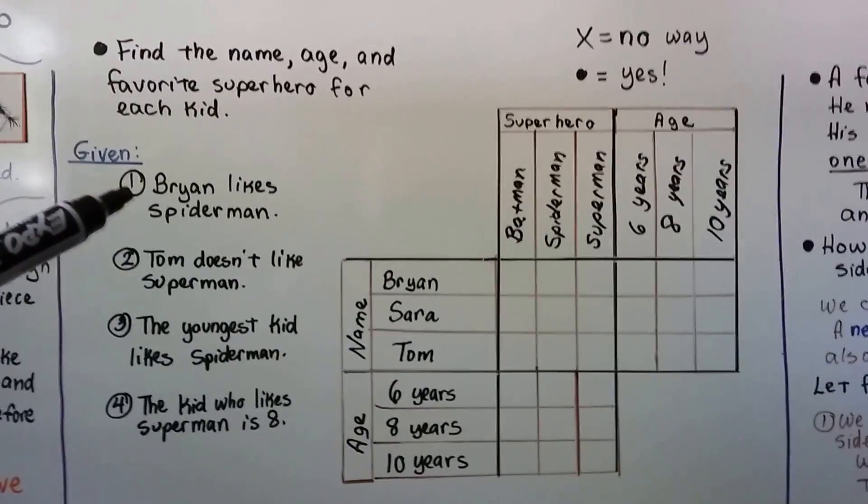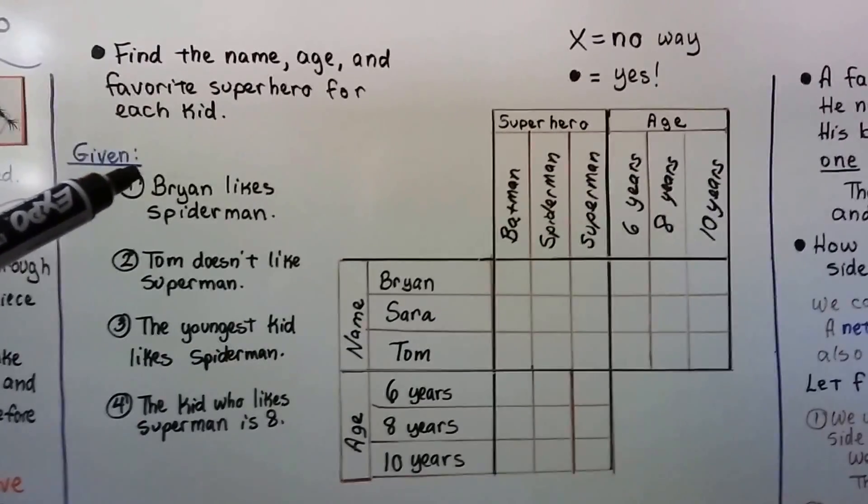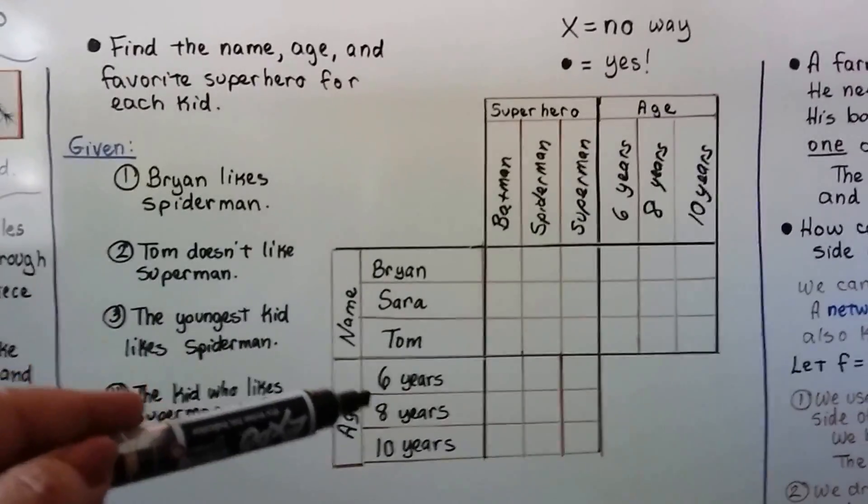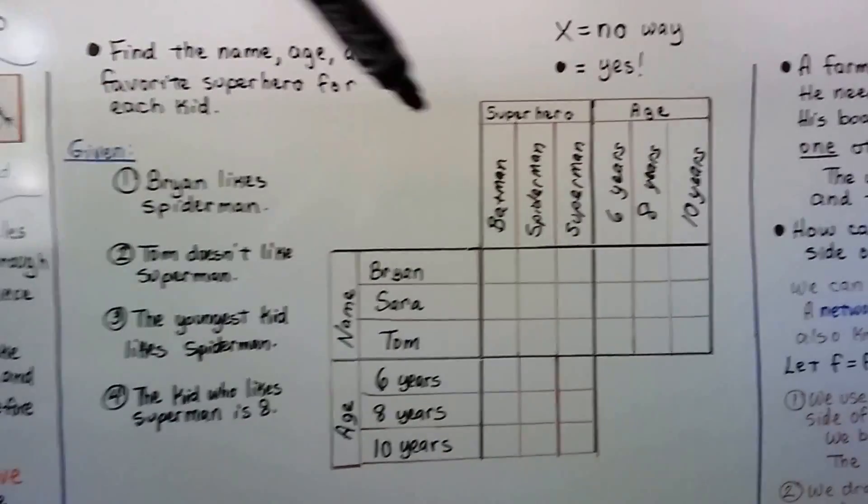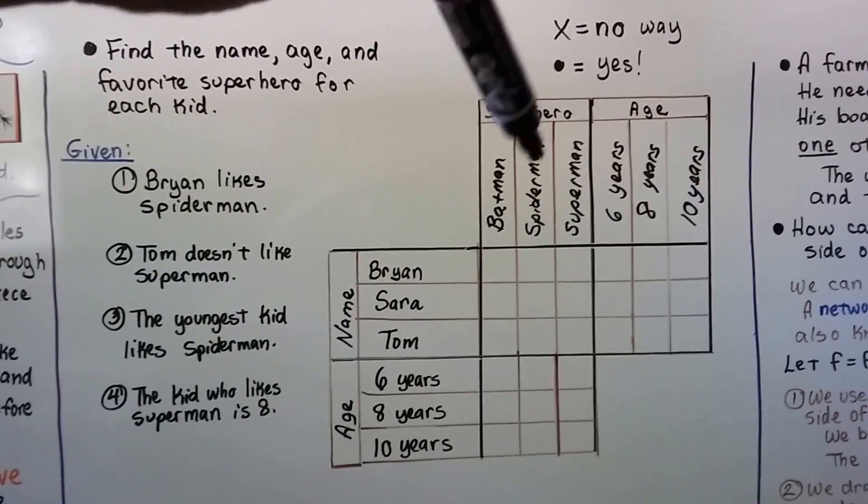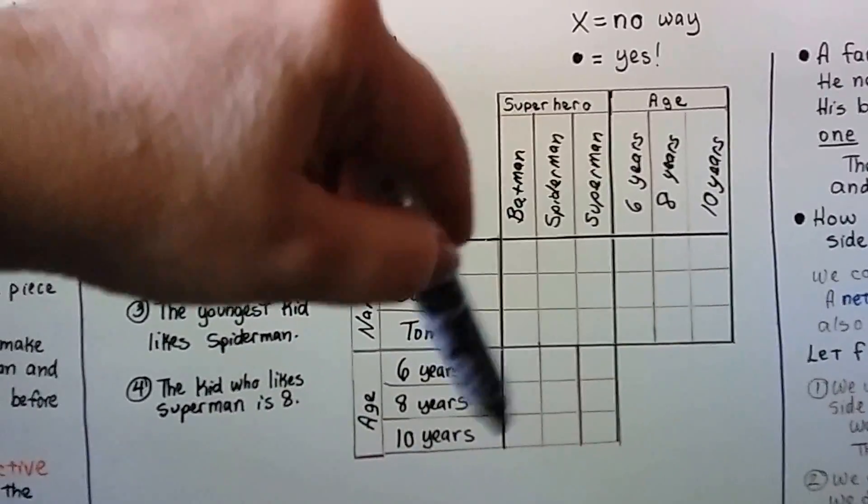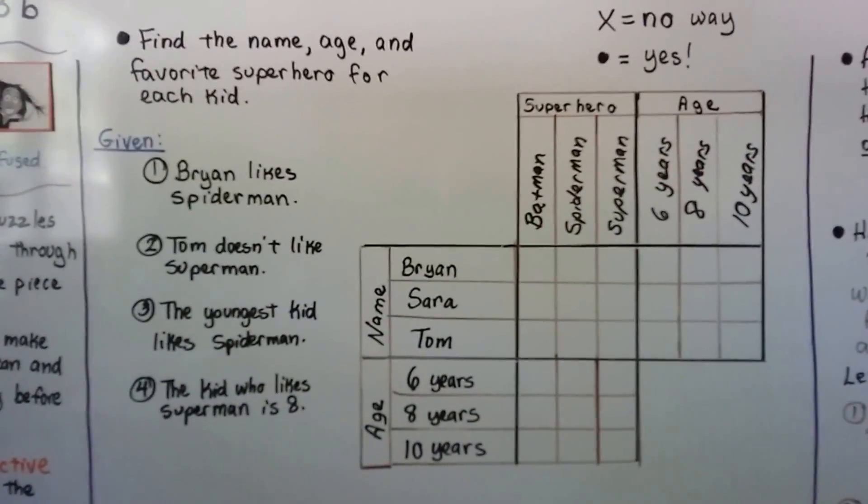Our first clue that's given is that Brian likes Spider-Man. We've got Brian, Sarah, and Tom for our children who are 6, 8, or 10 years old. And they like Batman, Spider-Man, or Superman. Here we have the ages again so we can cross-reference them.